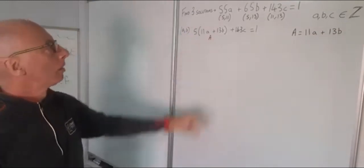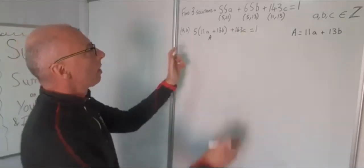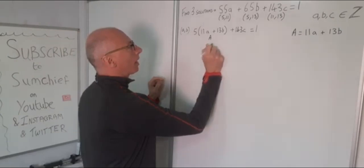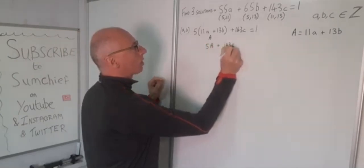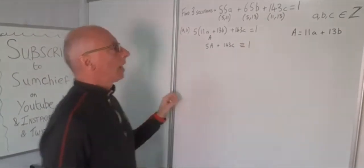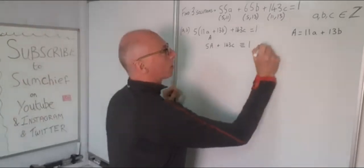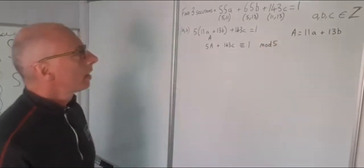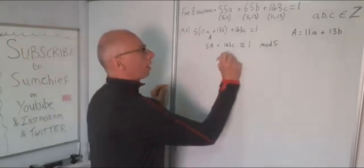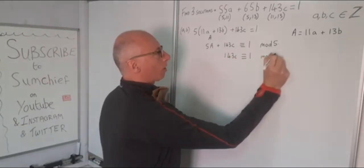So I'm going to take that out for now. What I'm looking for is a solution for C so I can have 5A plus something equals 1. So that's 5A plus 143C. Now what I'm looking for is a congruence with 1. And because we're looking at this factor 5, I want it to be modulus 5. So 5A mod 5 I can eliminate, so now what I'm looking for is just a solution for 143C congruent with 1, modulo 5.